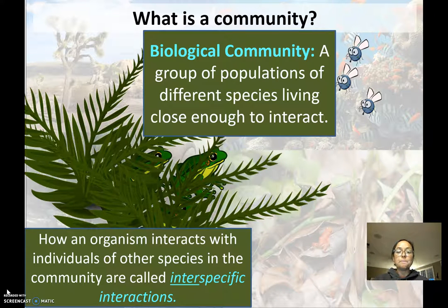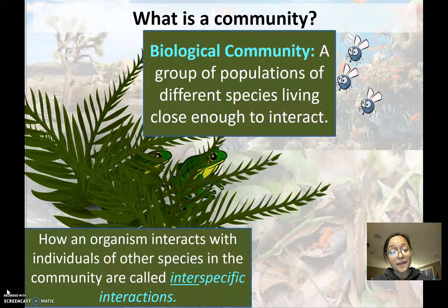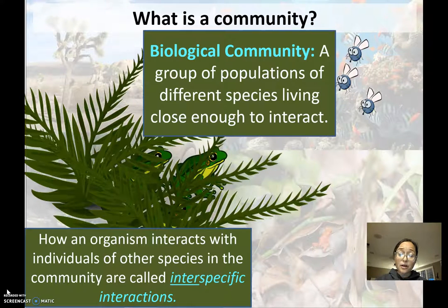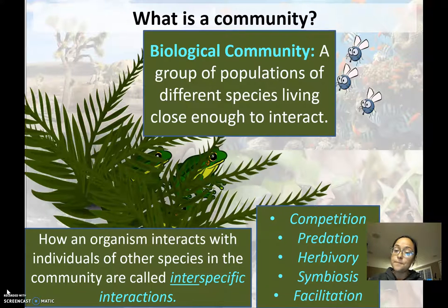Whereas if you're talking about competition within the same species — so if those frogs, frog one, two, and three, are all competing against each other for the flies — then that would be intra-specific interactions or competition. In community ecology and in this chapter, we're looking at the different ways that populations interact with each other to make up a community in an ecosystem. We're going to look at five different types of community interactions: competition, predation, herbivory, symbiosis, and facilitation.